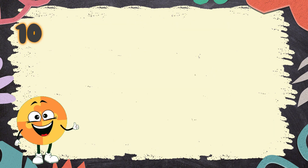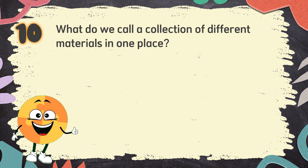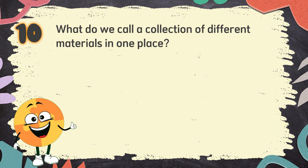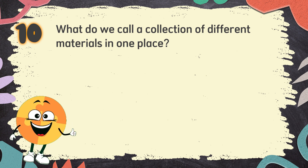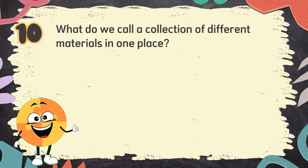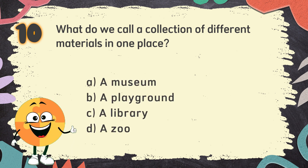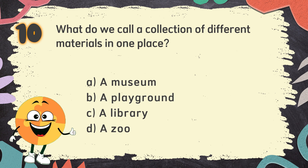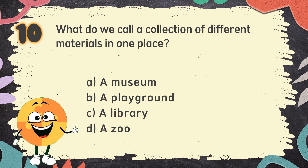Number 10. What do we call a collection of different materials in one place? The choices are: A. A museum, B. A playground, C. A library, D. A zoo.